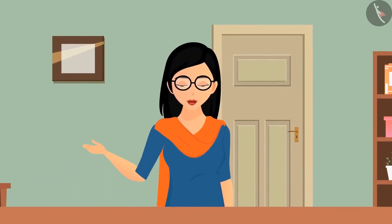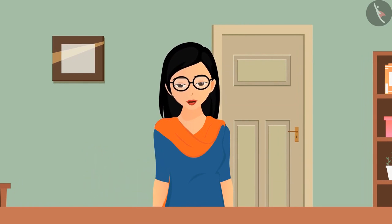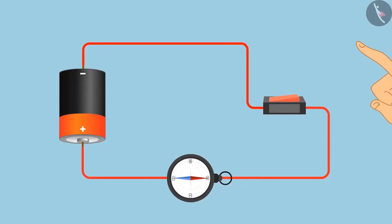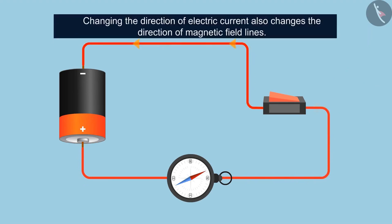If electricity has magnetic effects, then like the magnet, it must have magnetic field and field lines. Let's understand this closely. What will happen if the direction of electric current is changed in the circuit? The deflection of the needle will be in the opposite direction, which means that changing the direction of electric current also changes the direction of magnetic field lines.